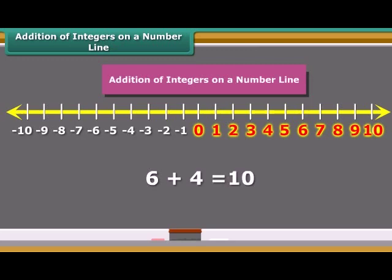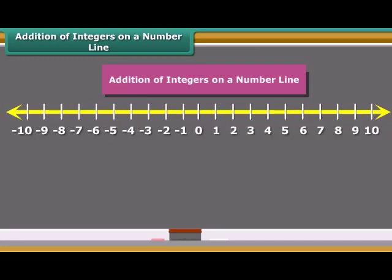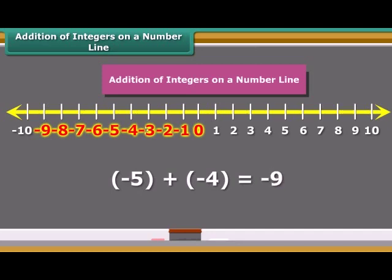Let us add two negative numbers, minus 5 and minus 4, on the number line. In this case, first we move five steps to the left of 0 reaching minus 5, and then we move four steps to the left of minus 5 and reach minus 9. So we see, when we add two positive integers, their sum is a positive integer. When we add two negative integers, their sum is a negative integer.